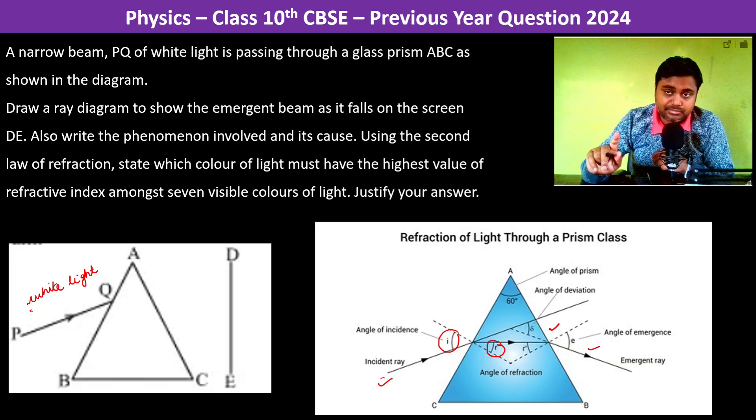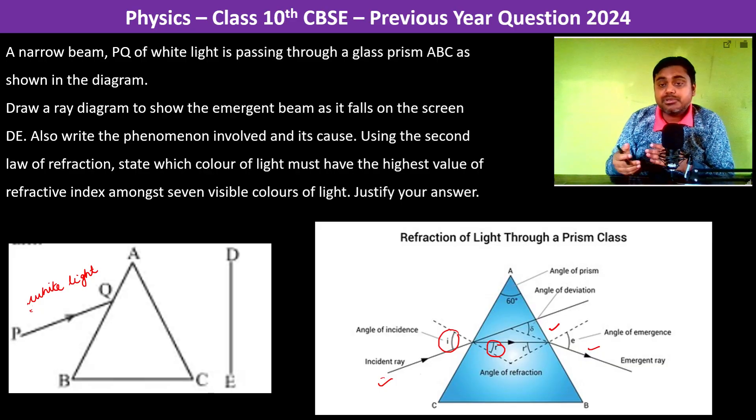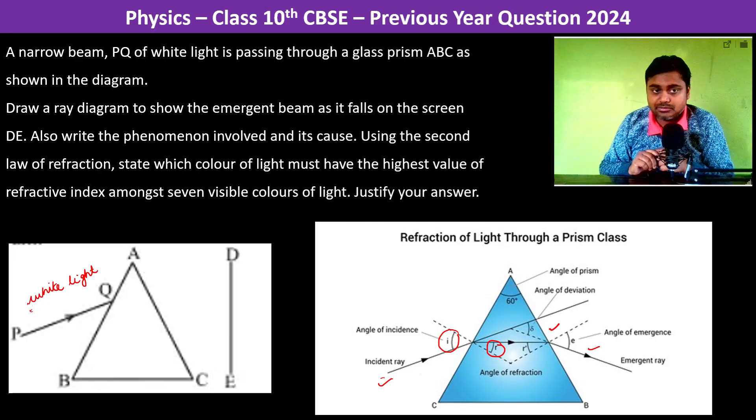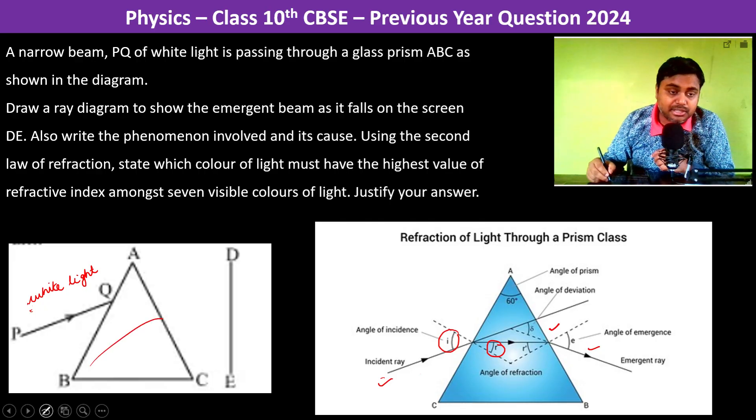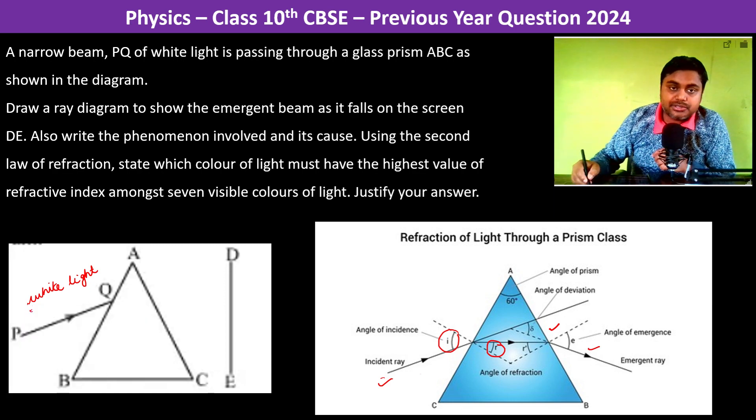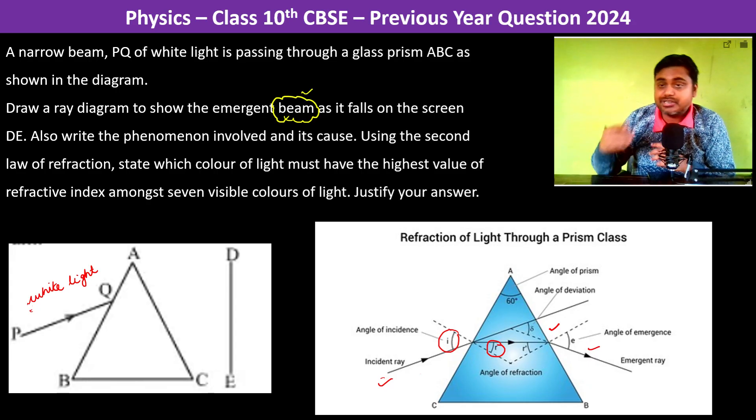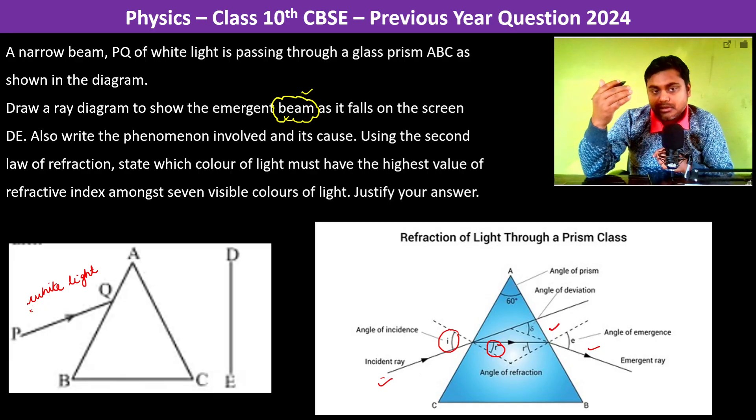This diagram is not what is asked in the question. What they are asking is the emergent beam. Since the word 'beam' is used, that means it is a collection of rays. So basically you have to show how the white light has split into different colors.